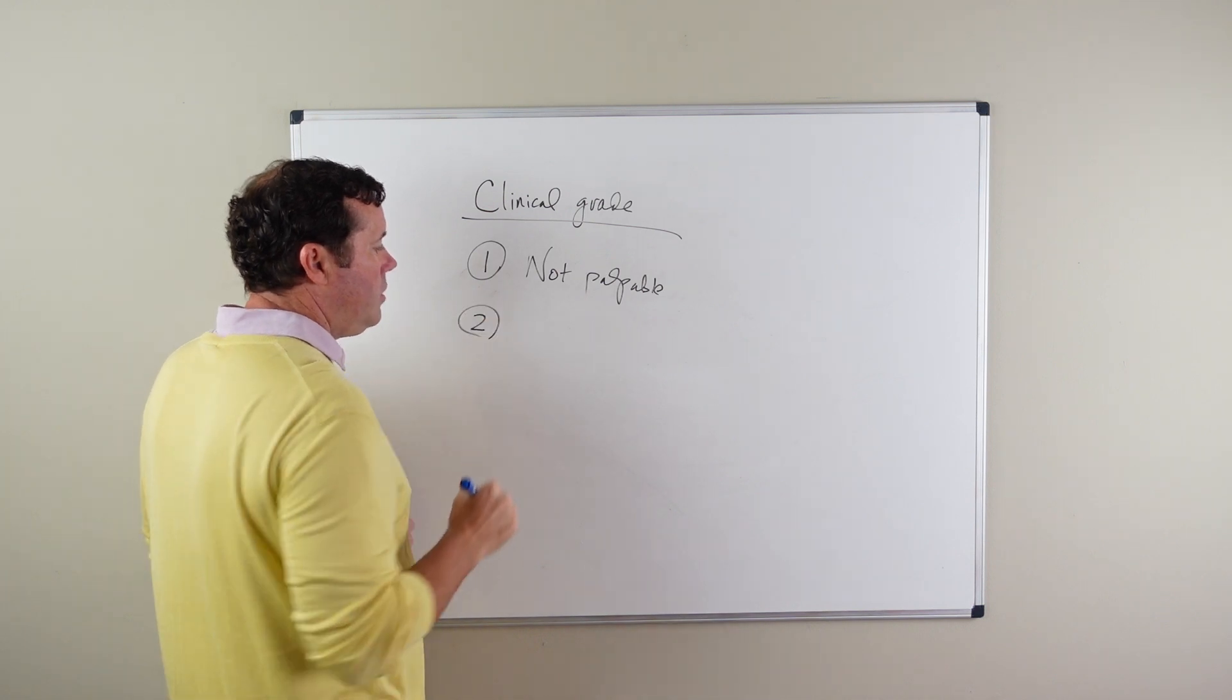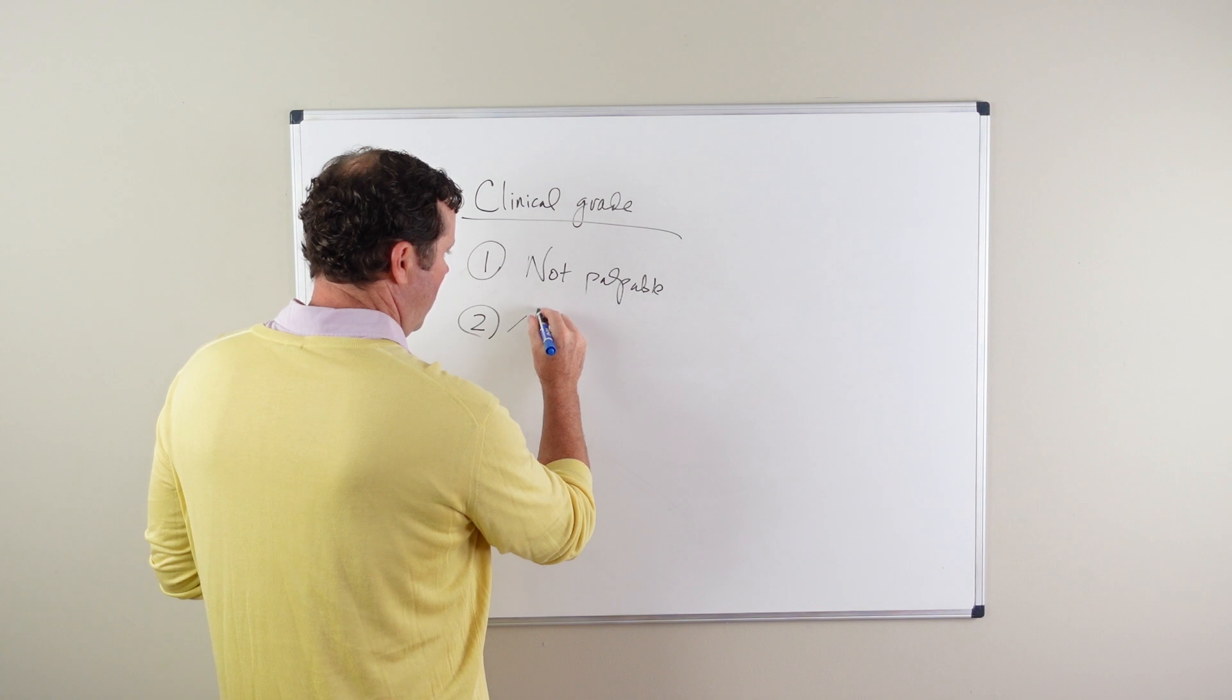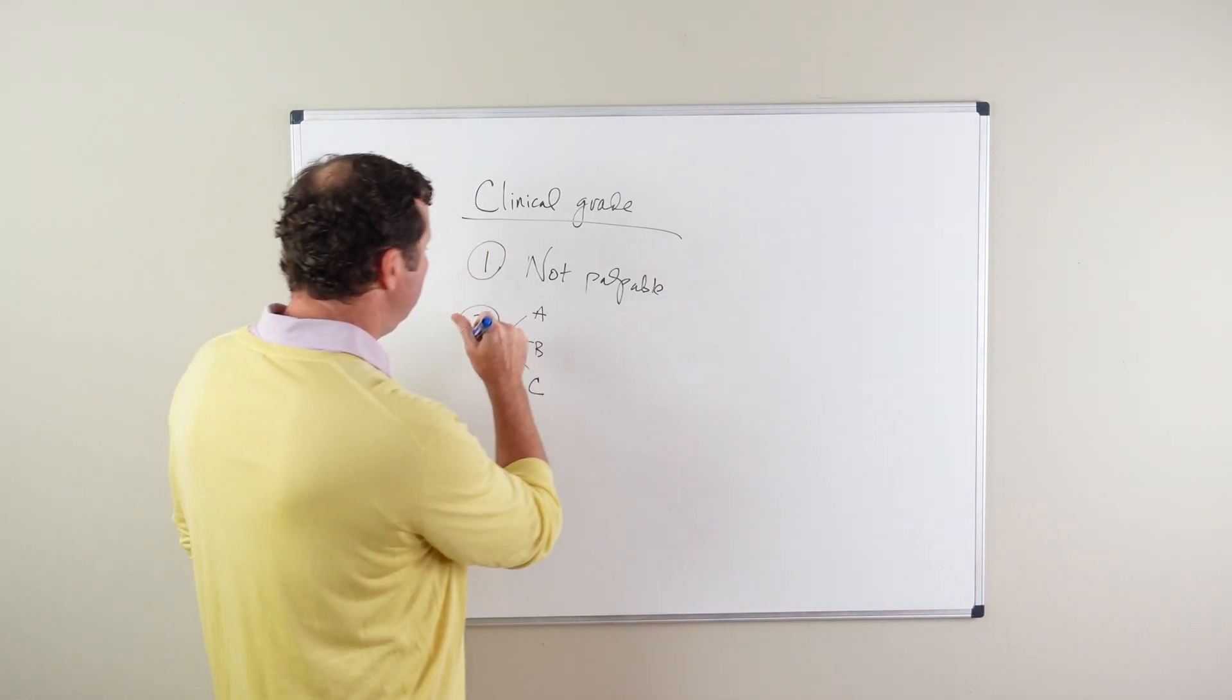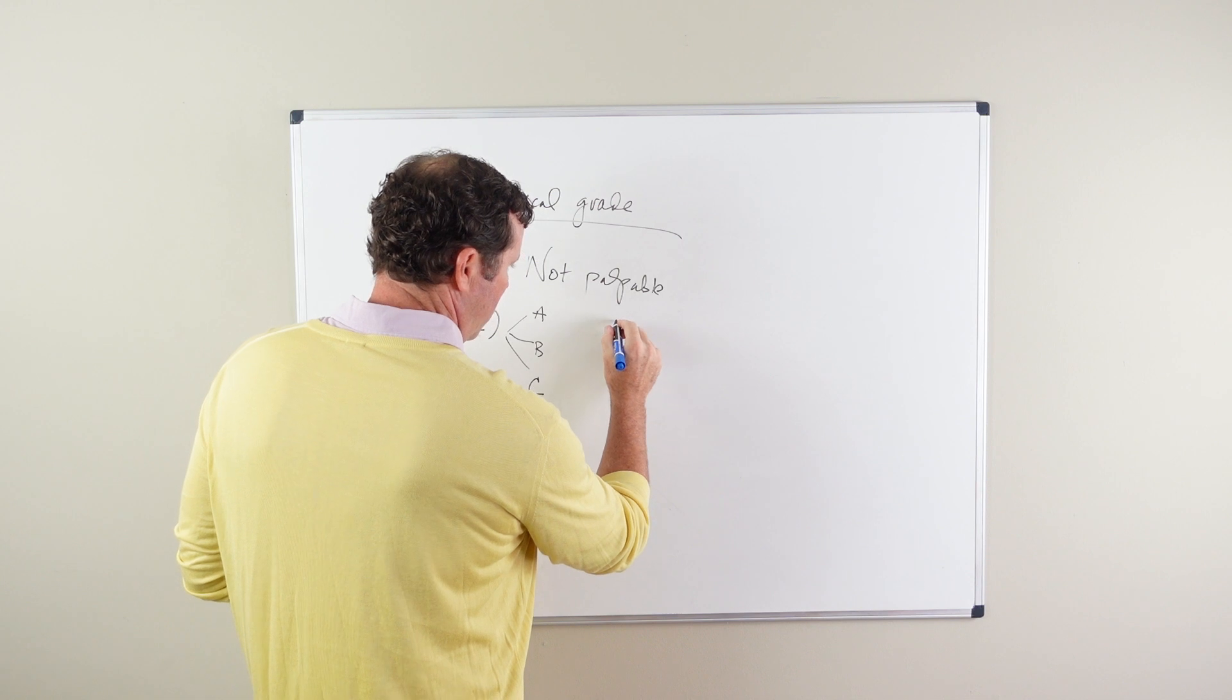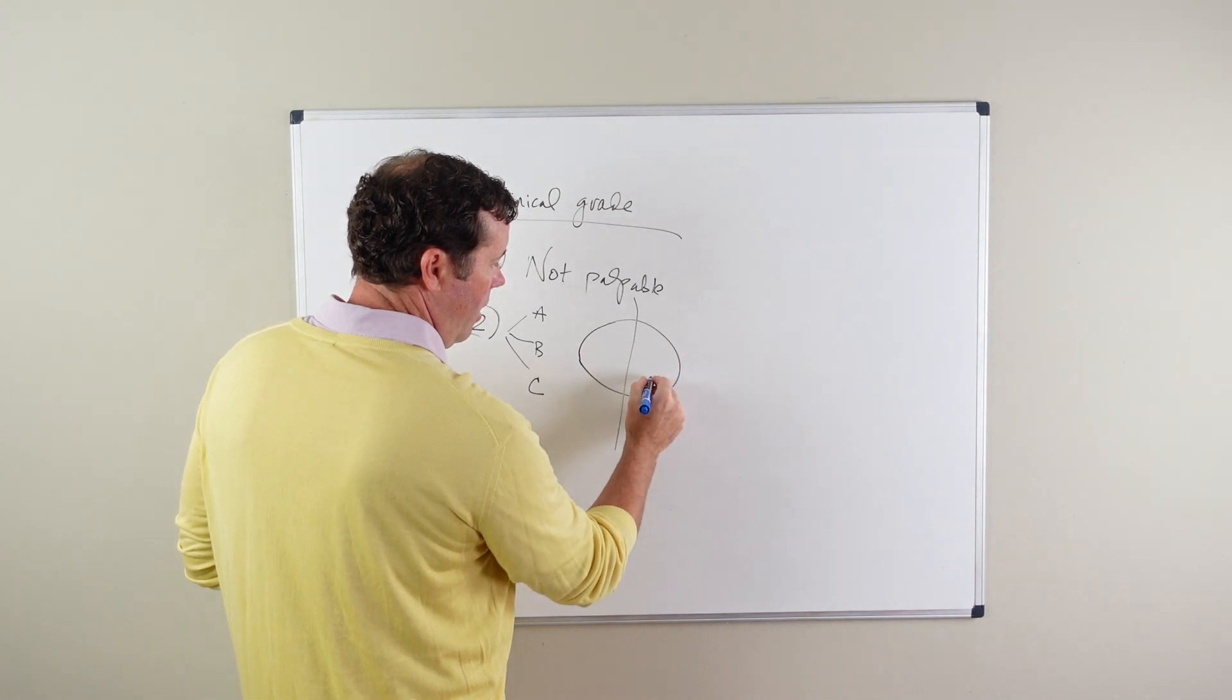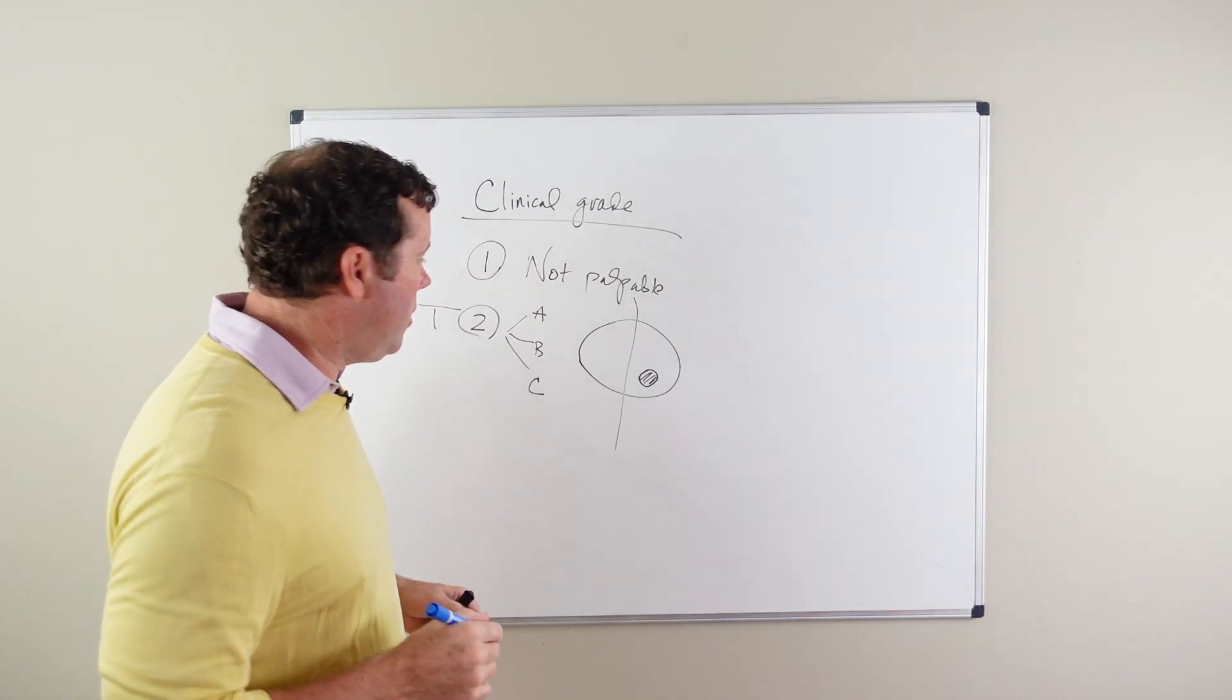Clinical grade two is split up into three different categories: A, B, and C. Clinical grade T2A is a cancer that involves less than half of one lobe of the prostate.